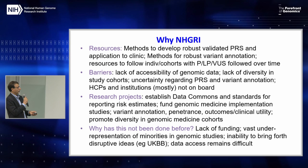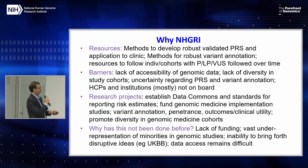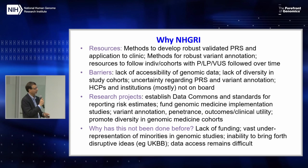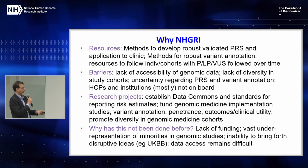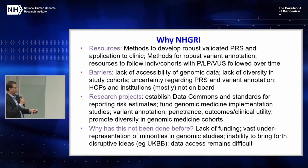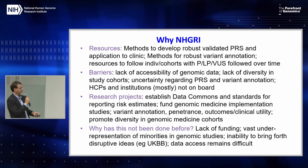Where NHGRI could contribute: developing methods for robust polygenic risk scores, validating and applying them in the clinical setting — eMERGE 4 is supposed to do some of that. We need to annotate variants robustly and follow individual cohorts with these variants over time. There are barriers to accessibility of genomic data, a lack of diversity, uncertainty about how to use PRSs and monogenic disease variants in the clinic, and inertia among providers and institutions. Establishing data commons could help address some of these challenges.